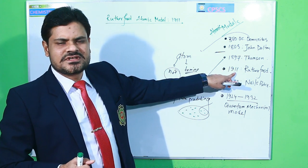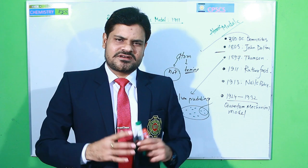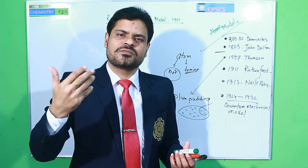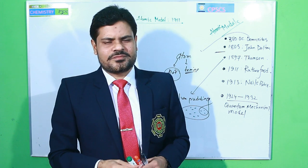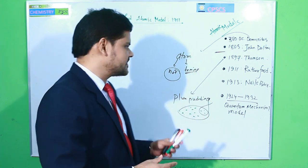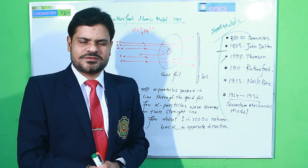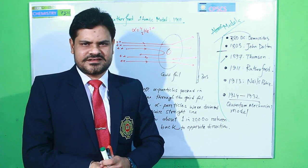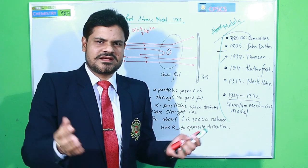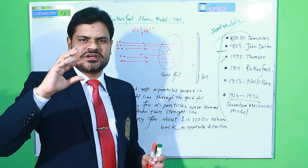Mr. Rutherford used alpha particles to know the inner composition of the atom. The alpha particle is like a double-charged helium ion — that is, a helium nucleus. The velocity of a helium nucleus is equivalent to an alpha particle, and that is why we can say that an alpha particle is a double-charged helium nucleus.